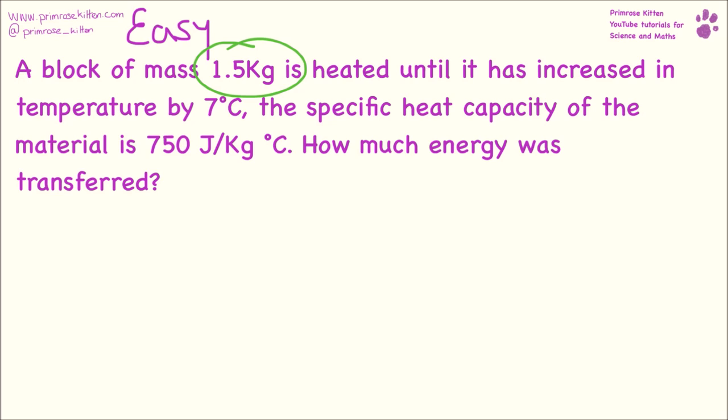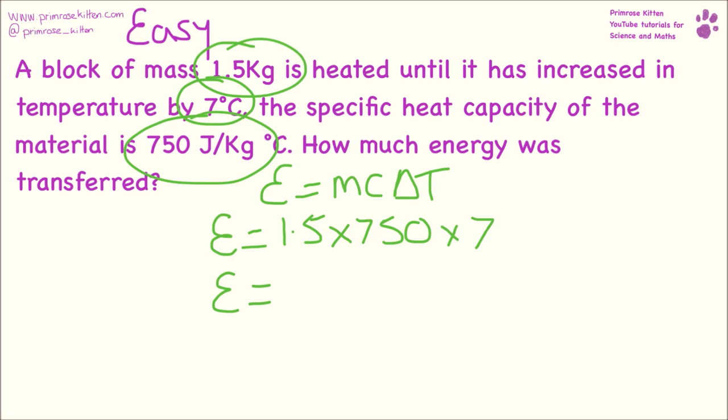So a block of mass 1.5 kilograms is heated and it has increased in temperature by 7 degrees. The specific heat capacity of the material is 750 joules per kilogram degree C. How much energy was transferred? So our equation, which we need to write down, is E equals M C delta T. Our M is here, this is our mass. So E equals 1.5. Our C is here, this is the specific heat capacity, 750, and the change in temperature is 7 degrees. So if we times all of those together, we get 7,875 joules. It's really important that you write your units down here.